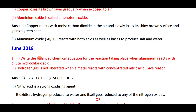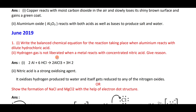The balanced chemical equation for aluminium reacting with dilute hydrochloric acid: 2Al plus 6HCl gives 2AlCl₃ plus 3H₂. Hydrogen gas is not liberated when a metal reacts with concentrated nitric acid because nitric acid is a strong oxidizing agent — it oxidizes the hydrogen produced to water.